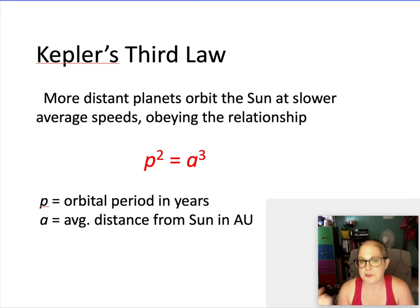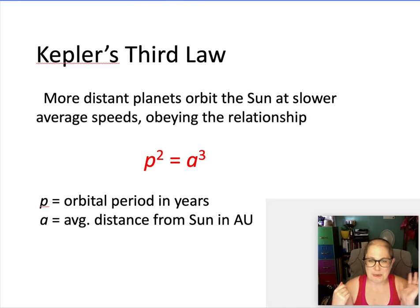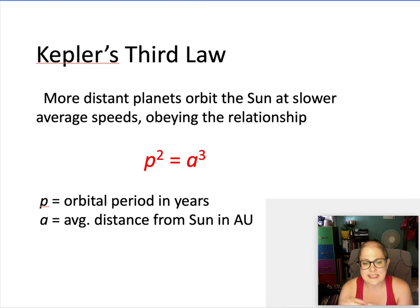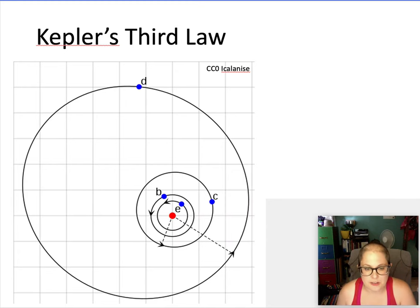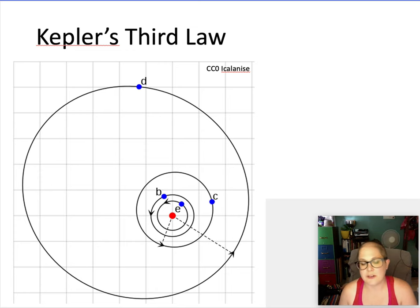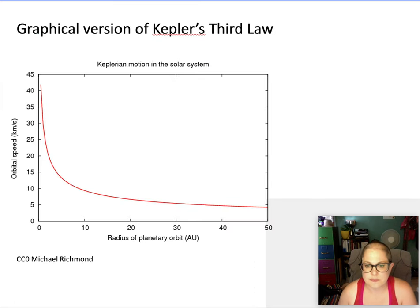The semi-major axis is measured in astronomical units (AU), defined as the average distance between the Earth and the sun. For Earth: one year squared equals one AU cubed — one equals one — which checks out. The relationship works for all planets: planets with smaller orbits have shorter periods, planets with bigger orbits have longer periods. It holds for all planets regardless of their different elliptical orbits around a star.